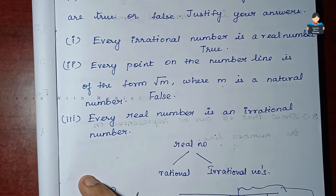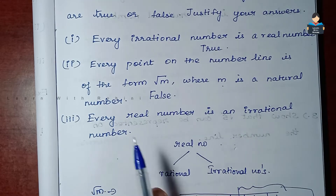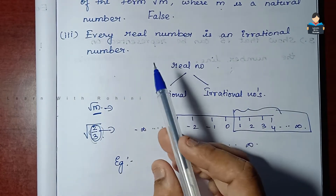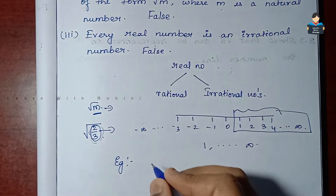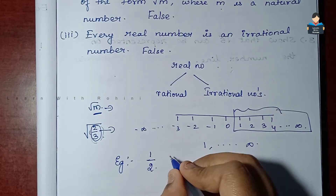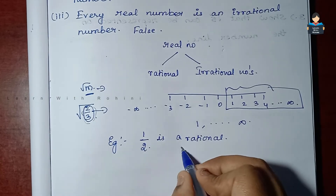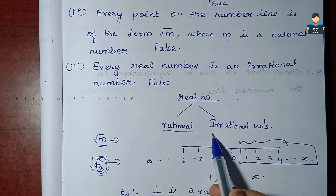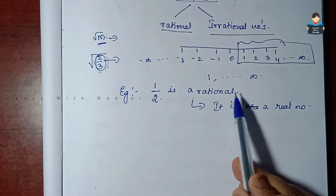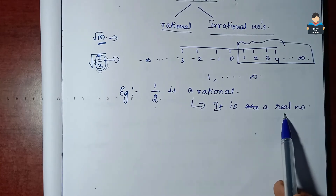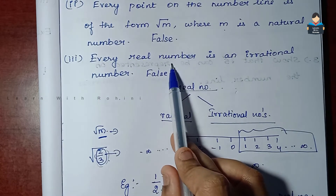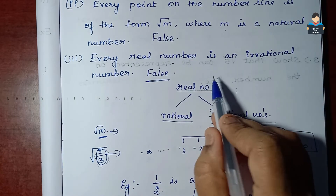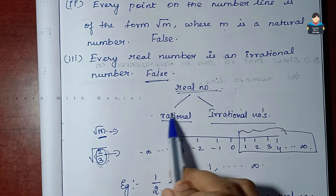The third statement is: every real number is an irrational number. Consider what a rational number and irrational number are. The number 1/2 is a rational number, and 1/2 is also a real number. But the statement claims all real numbers are irrational — that is false. Real numbers include both rational and irrational numbers.